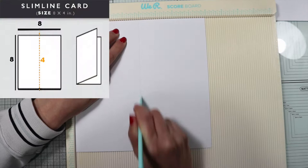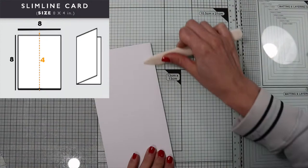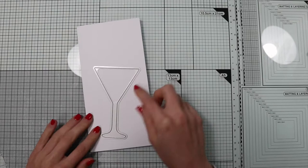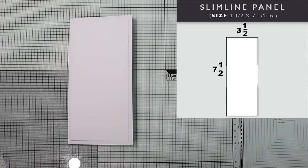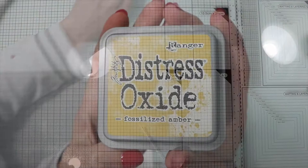First of all, I'm going to make my card base, a 4 by 8 inch slimline card on white cardstock. Then I cut out the background panel, again on white cardstock, slightly smaller than the card base. I'm going to color the background with distressed oxide ink Fossilized Amber.